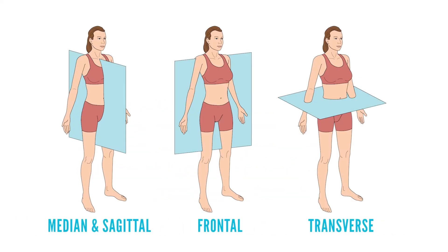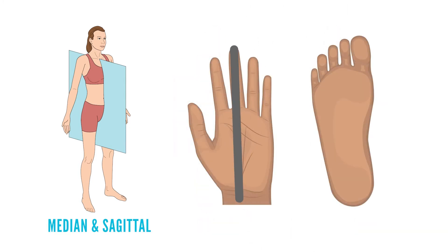The sagittal plane is also known as the median or mid-sagittal plane. It's the vertical plane that divides the body longitudinally into right and left halves. Any plane parallel to the median plane is called parasagittal, or simply a sagittal plane. Interestingly, the median plane of the hand is on the third digit, whereas the median plane of the foot is on the second digit.